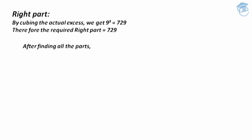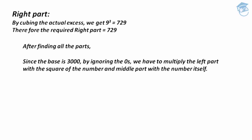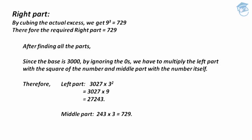Now after finding all three parts, since the base is 3000, we ignore the zeros and multiply the left part by 3² and the middle part by 3. So the left part becomes 3027 × 9 = 27243, and the middle part becomes 243 × 3 = 729.